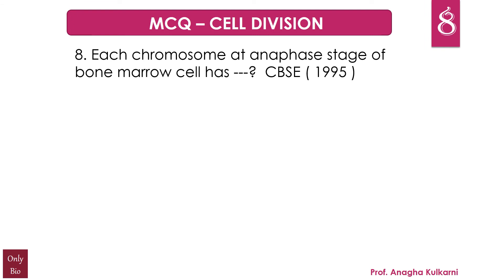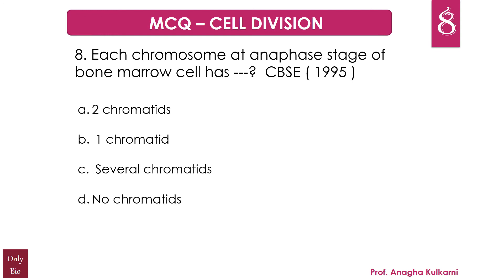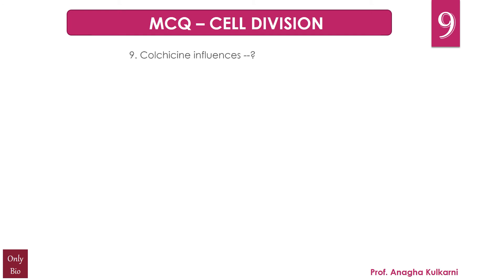The next question is: each chromosome at the anaphase stage of a bone marrow cell has — A) two chromatids, B) one chromatid, C) several chromatids, D) no chromatids. The correct answer for this question is B) one chromatid.